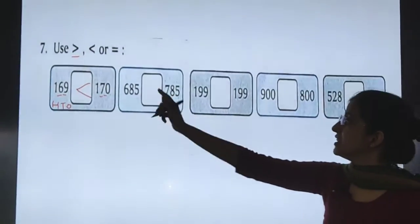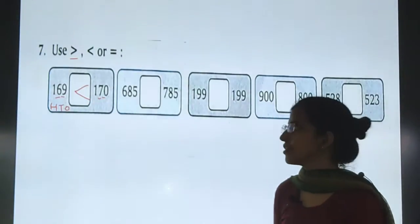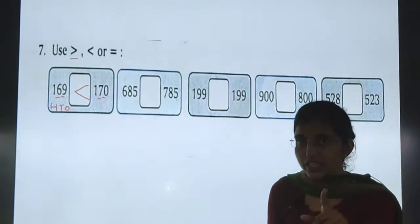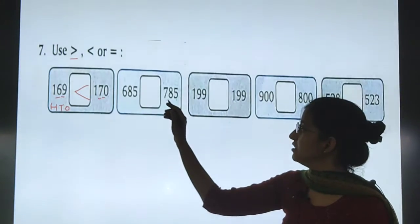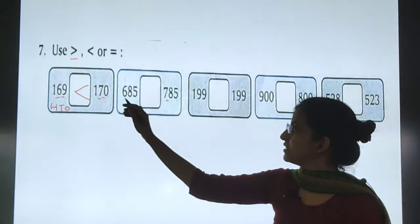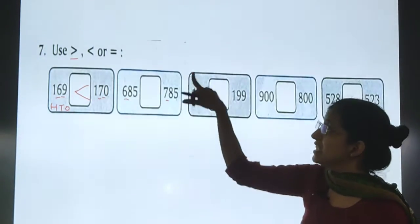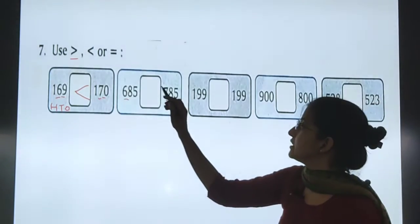Now comes 685 and 785. Come on children. Start comparing the number, the digit present on hundreds place. At hundreds place, we are having 7. Here we are having 6. So, 7 is greater than 6. Right? So, we will put this sign. Greater than.